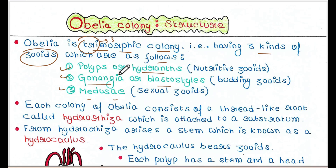Polyps are also called nutritive zooids, gonangia are also called budding zooids, and medusa are also called sexual zooids. So there are three types of structures in the Obelia colony, and each one of them has a different function.